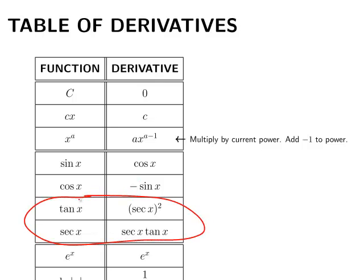Ah, there they are. So sec x squared is the derivative of tan x, and sec x tan x is the derivative of sec x. That means I can integrate both of those things.